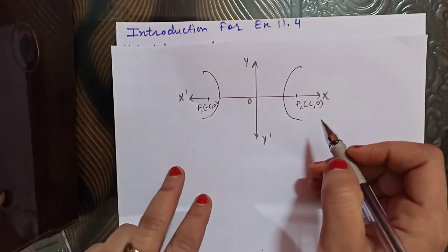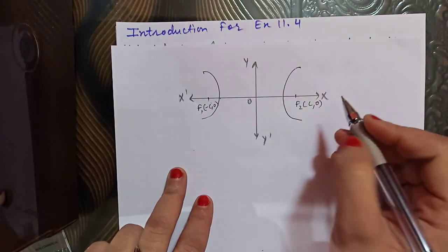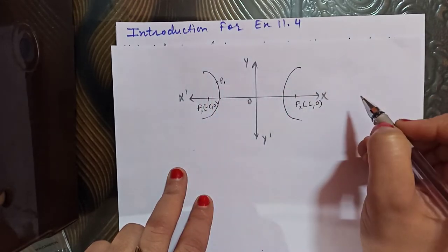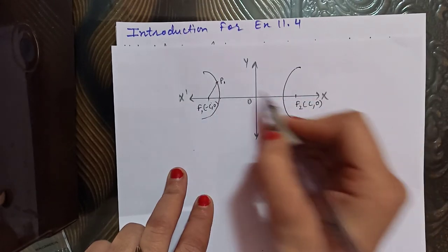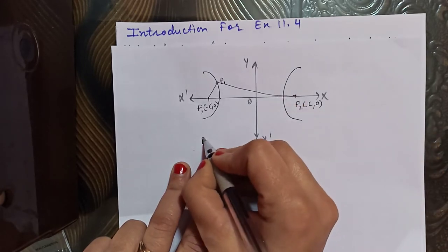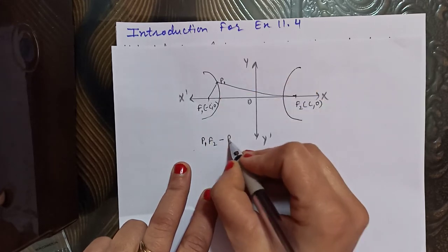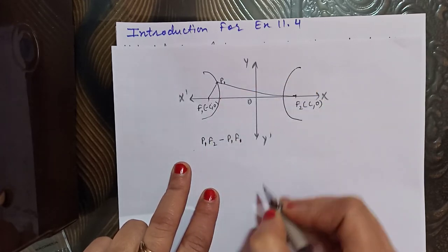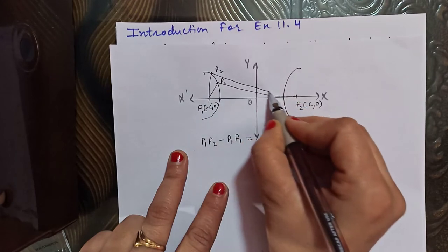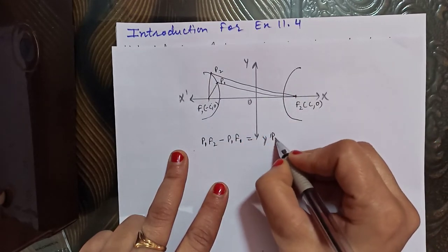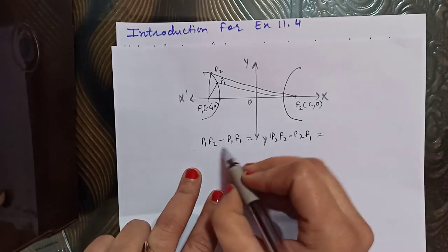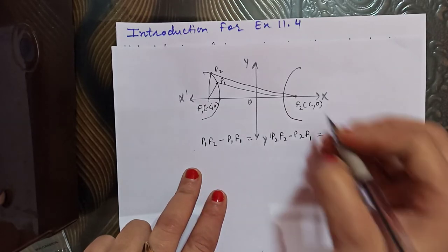The difference between the two fixed points is constant. Consider point P1 on the hyperbola. We get P1F2 minus P1F1. Then take another point P2, join it with F1 and F2, and we get P2F2 minus P2F1. Whatever the result of these differences, it will be a constant number.